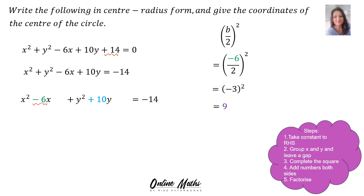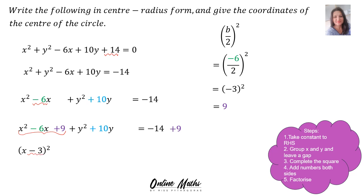Step 4 says: add numbers to both sides. You will take the plus 9 and add it in your gap on the left-hand side, and what you do on the left you do on the right — you also add 9 on the right-hand side. Then, x squared minus 6x plus 9 — those three terms, the trinomial — you will write as a perfect square. That becomes x minus 3, squared. The number inside the bracket, x minus 3, is the number inside the bracket on the b over 2 side, just before you squared it.